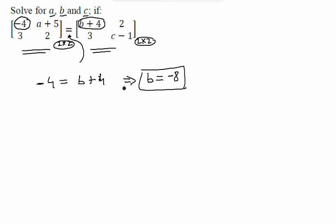Let us go to another term. Let us compare 1,2 term, first row, second column with first row, second column. So you will get a plus 5 is equal to 2. This will give you a is equal to minus 3.